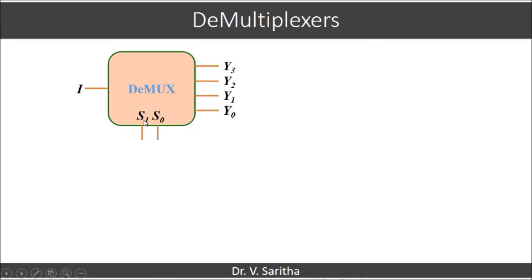The operation of the demultiplexer is based on the S1 and S0 values. The value of the input, whether it is 0 or 1, or if we have more bits, the value of the input will go to a particular output. The selection of the output is based on the values of S1 and S0.